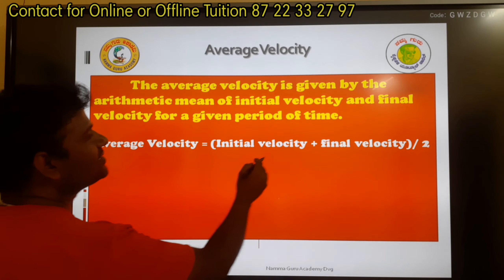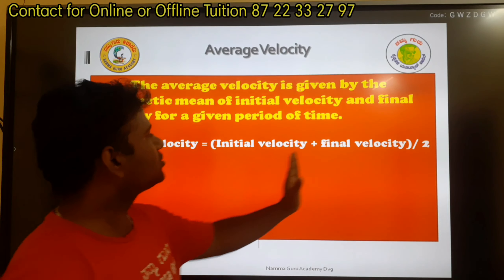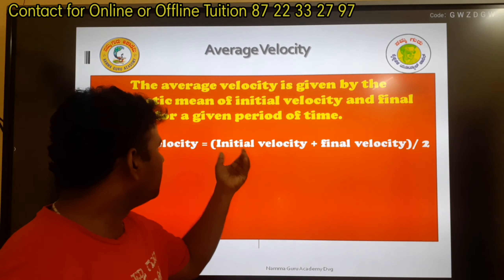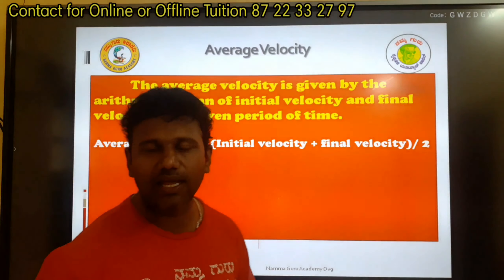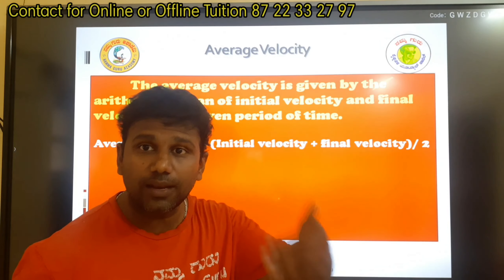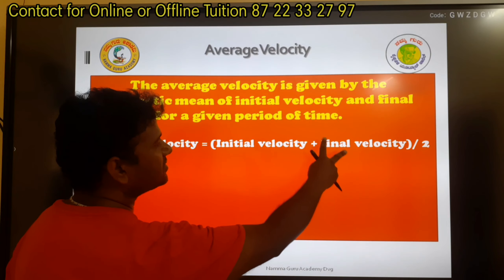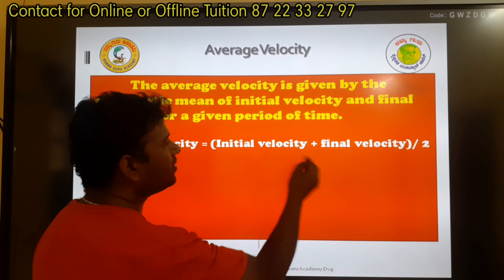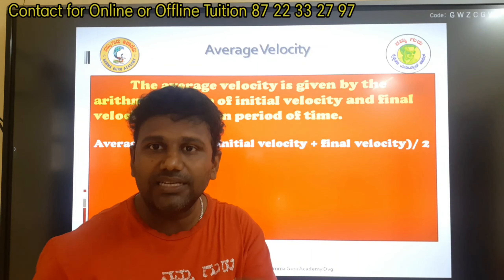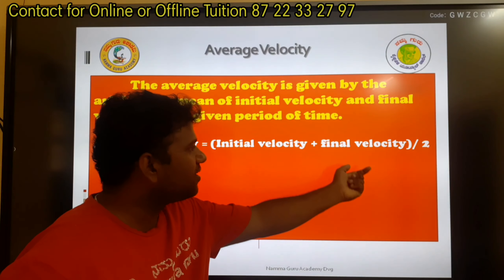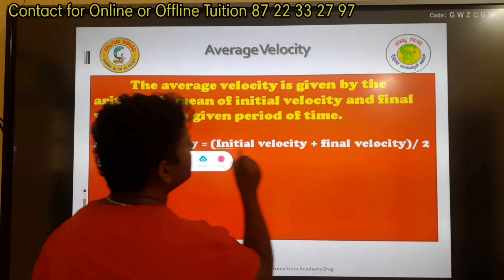Average velocity is equal to initial velocity plus final velocity. If we find the arithmetic mean, it is the sum of all observations divided by total number of observations, divided by 2. The average velocity formula is initial velocity plus final velocity divided by 2.